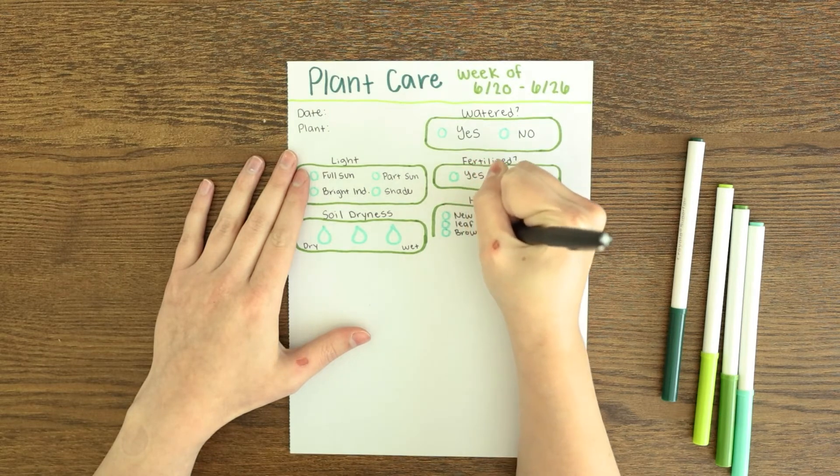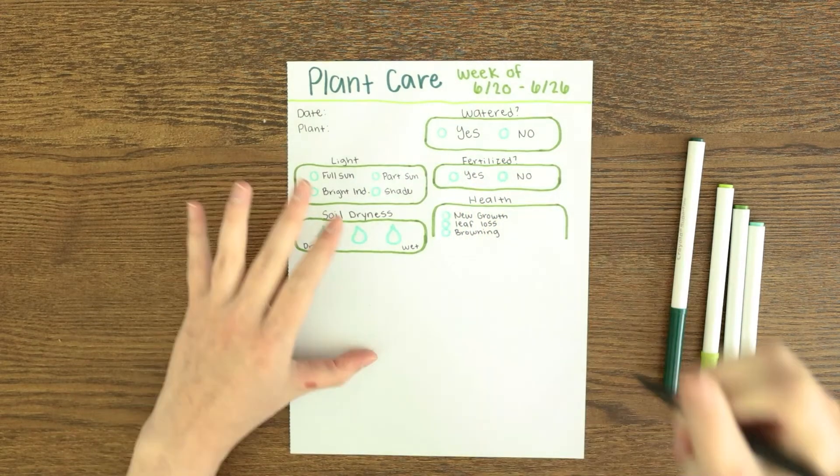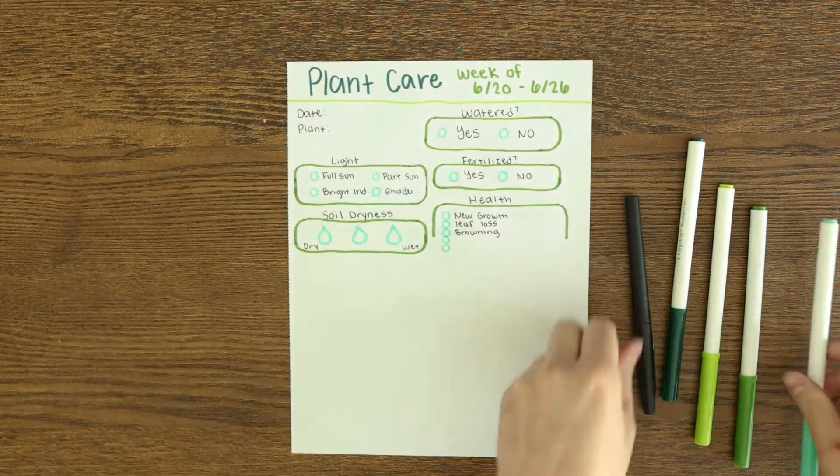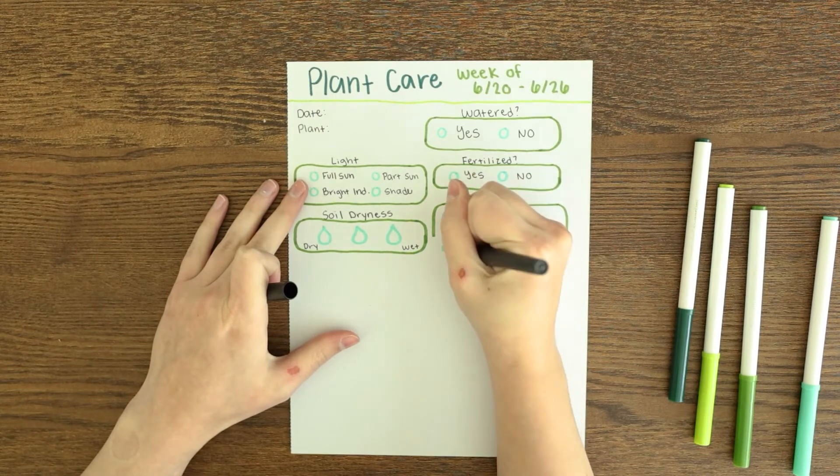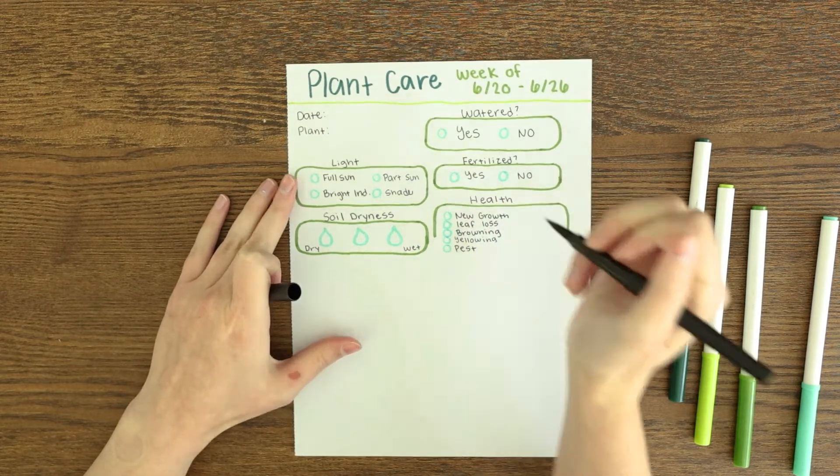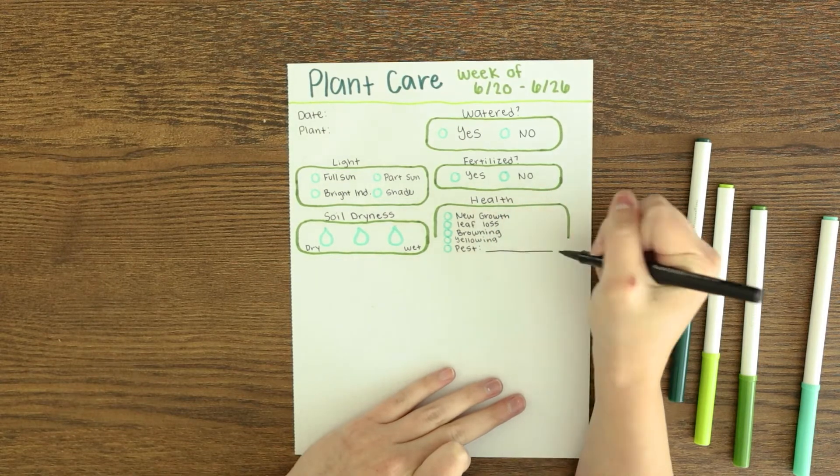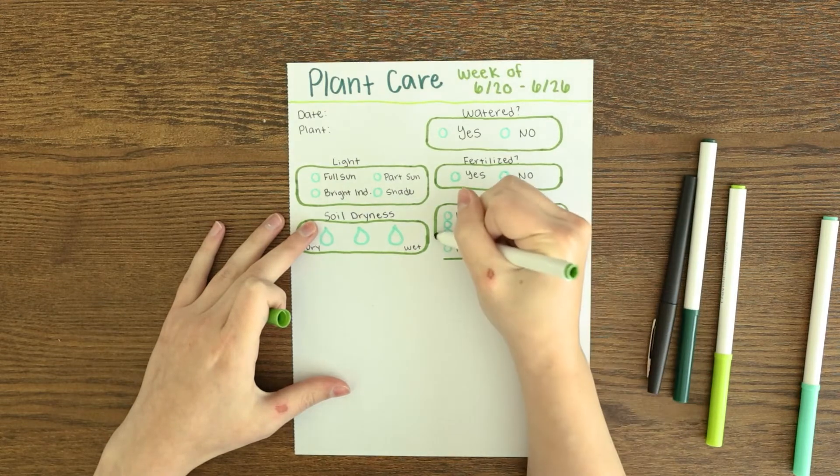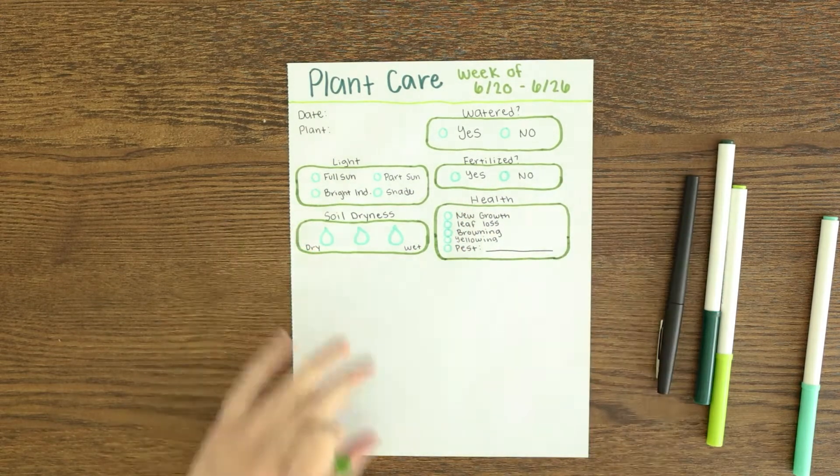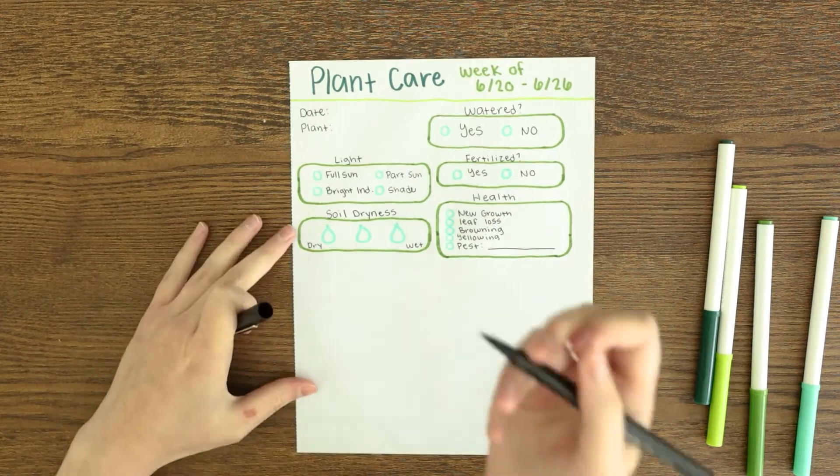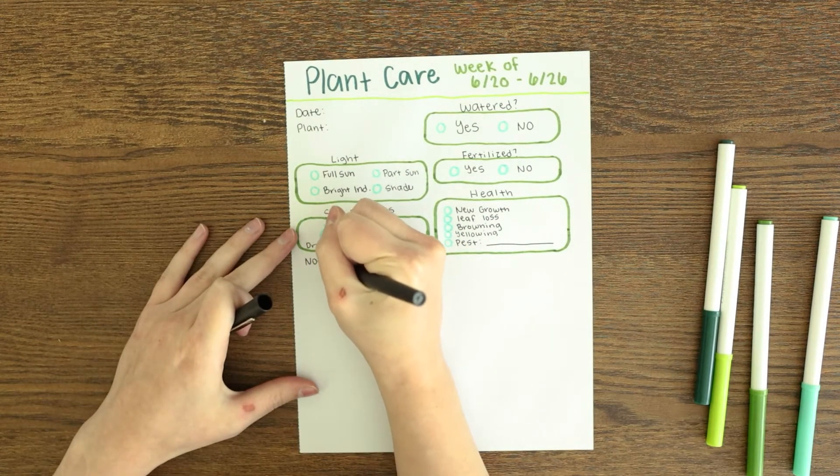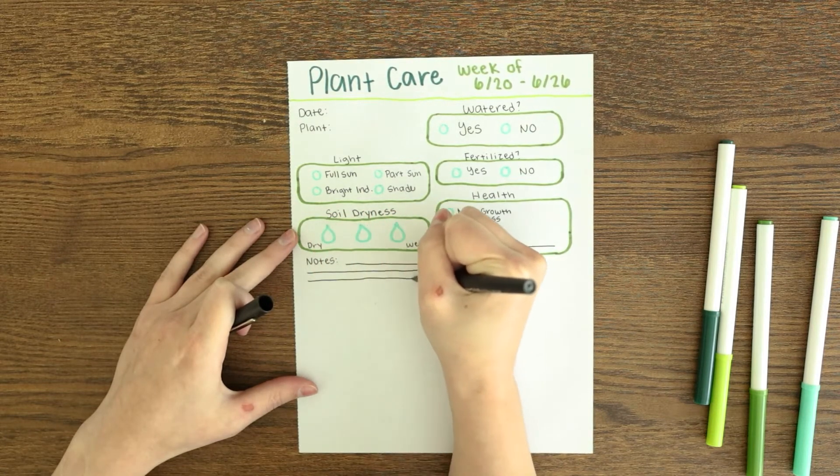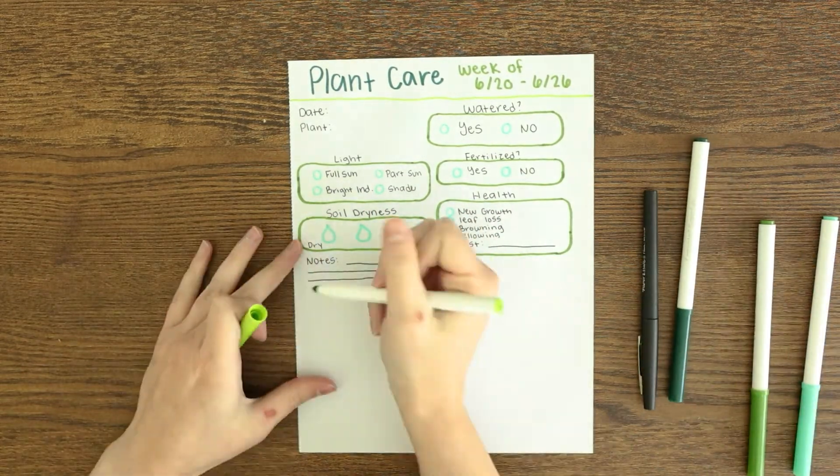The last box says 'health' and I put new growth, leaf loss, browning, and the next one is going to be yellowing, and then any pests that I see. I wrote a little line - if I know what pest it is, I might as well write it down. Later on if I continuously see the same pest, I can look back and see maybe what I'm doing to bring these pests, or just let myself know I've had these pests before and I know how to handle it.